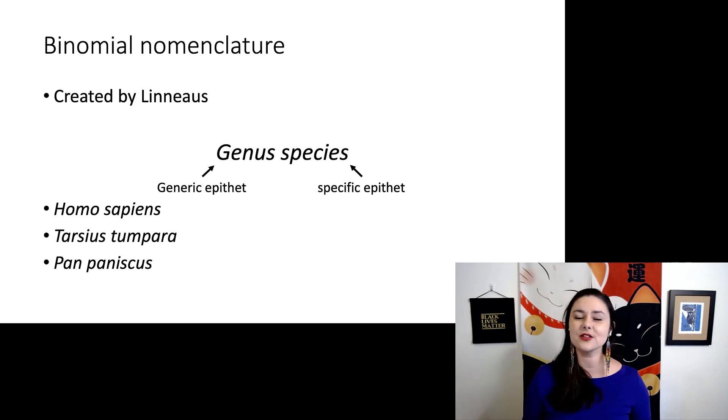Here are a couple examples: Homo sapiens, Tarsius tumpara, and Pan paniscus. Please note the format. Genus is capitalized, species is not, all italicized. Using this specific format is a note to other scientists that you know what you're talking about. This is part of scientific code switching to make sure you communicate that you understand what's going on.